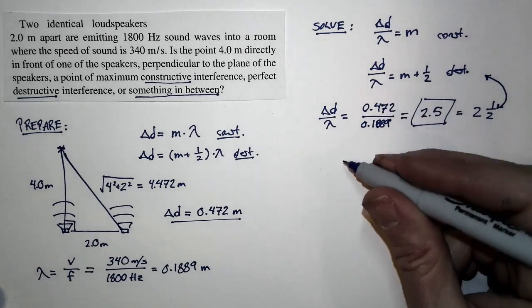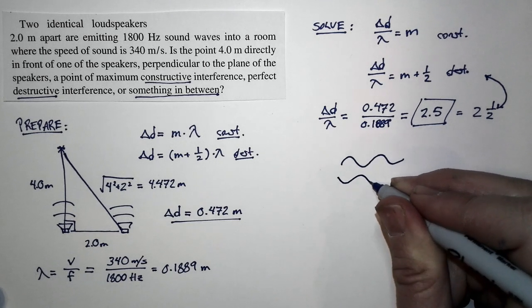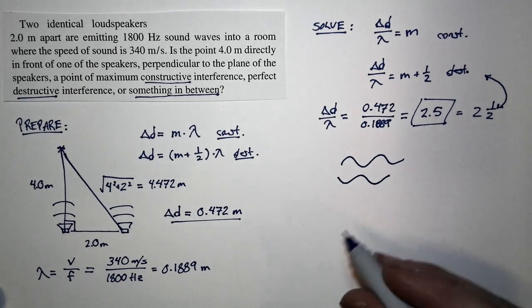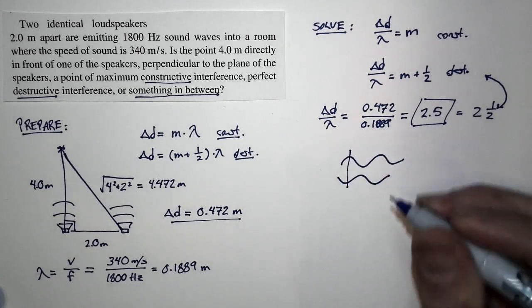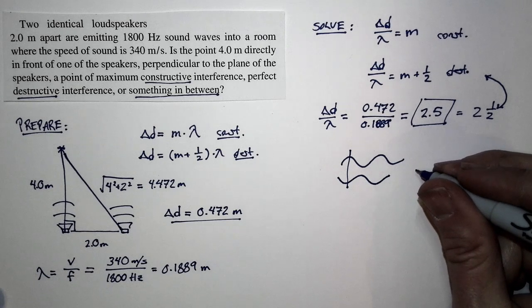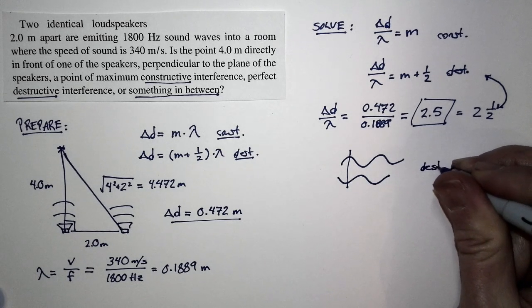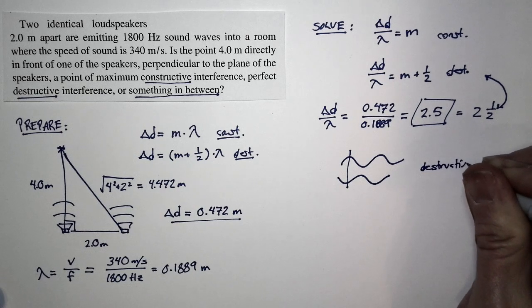The waves have overlapped so that the crests of one wave meet the trough of the other wave. As a consequence, at that point, I have crests meeting troughs. The waves are exactly out of phase, they cancel. So I have perfect destructive interference at this point.